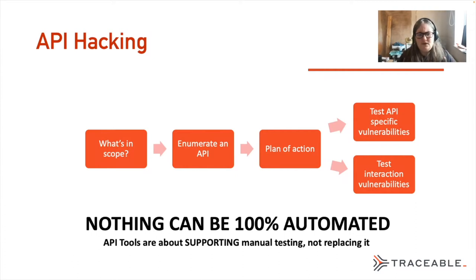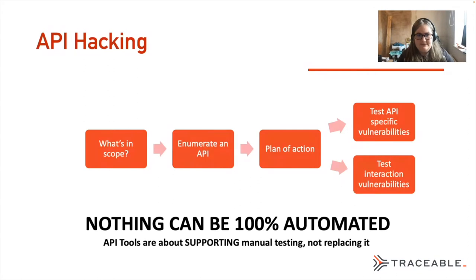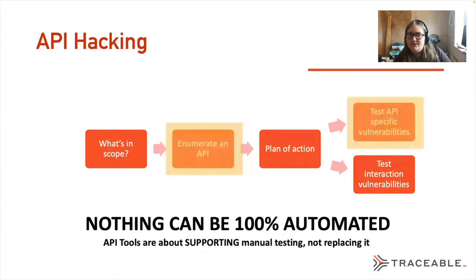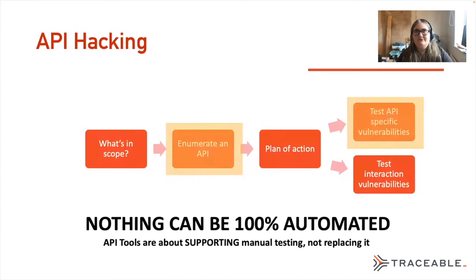It's really not about pressing a button and the website is hacked. Nothing can be 100% automated. That said, there are two clear stages that can be automated: one is the enumeration aspect, which is time-consuming, and the other is testing for some kinds of vulnerabilities.